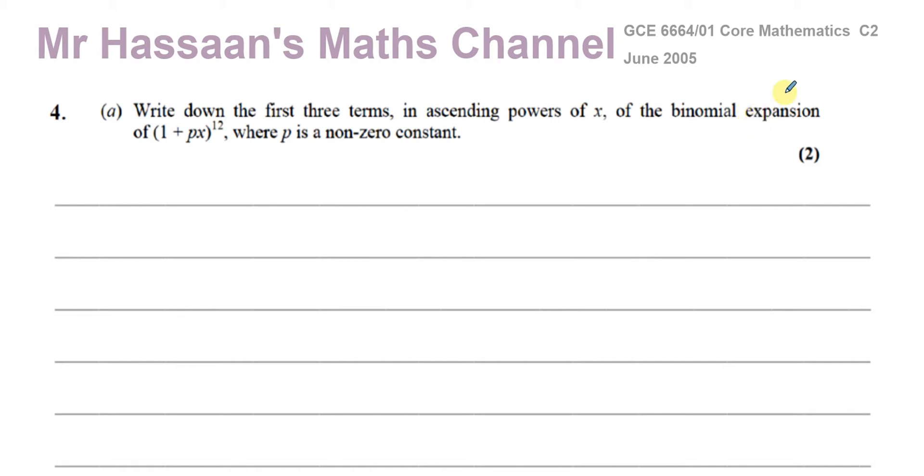Of the new international A-level P2. So this is within that syllabus. So it says, write down the first three terms in ascending powers of x of the binomial expansion of 1 plus Px to the power of 12, where P is a non-zero constant.